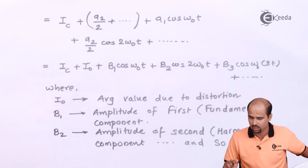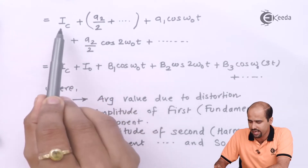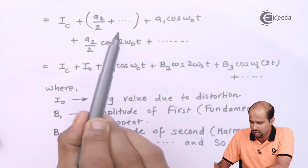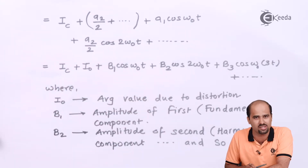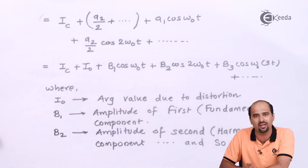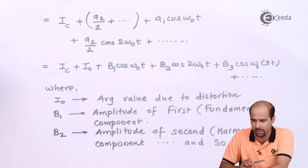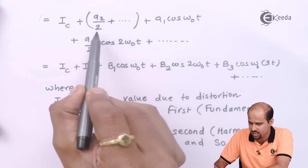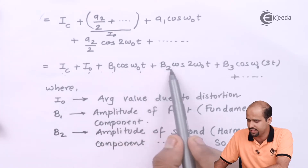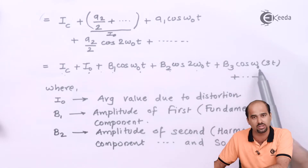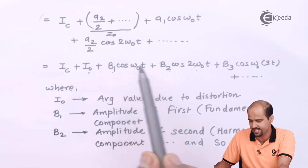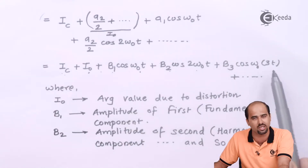When considering all terms, I can write: IC plus A2/2 plus A3/3 plus A4/4 and so on — whatever that gives is a DC-type constant value that does not depend on frequency, which is the basic reference signal. So IC plus I₀, where I₀ represents that constant, gives the full expression: IC + I₀ + B1·cos(ω₀t) + B2·cos(2ω₀t) + B3·cos(3ω₀t), with the first frequency at ω₀, second at 2ω₀, third at 3ω₀ and so on.